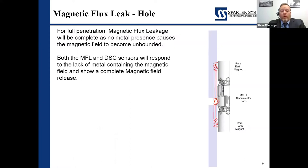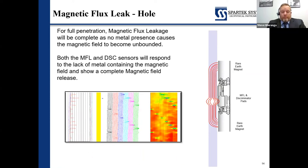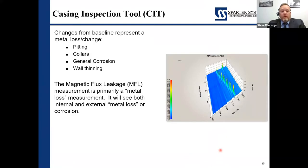If we have a complete hole, we're going to completely lose the magnetism, and that will show up as a complete loss. Looking at this example, these are perforations and we can actually see the helix of the gun. This is a map of the entire well split and spread open — a full 360 degrees. Each curve is picking those up, and multiple curves will pick up each perforation depending on the size of those holes. Once we have that data, we can present it in 2D or 3D format to get an idea of what that damage actually looks like.